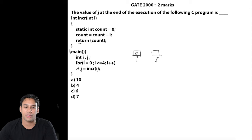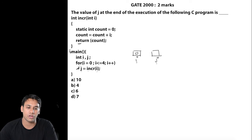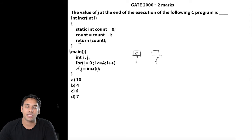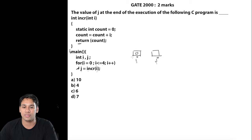In the main function we have two variables: variable i and variable j. In the for loop, we are initializing the value of i as 0, so i is now going to store 0. Then we check if i is less than or equal to 4. The value stored in i is 0, and 0 is less than 4, so this condition is true.